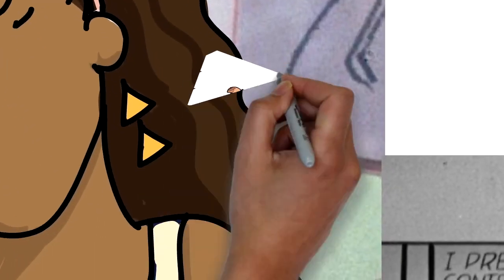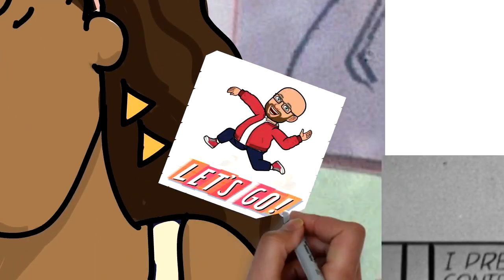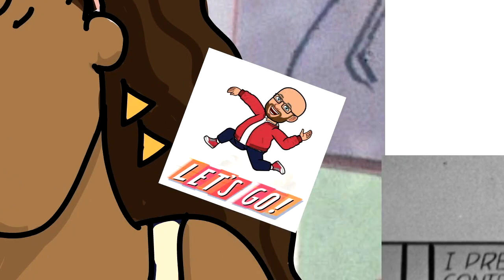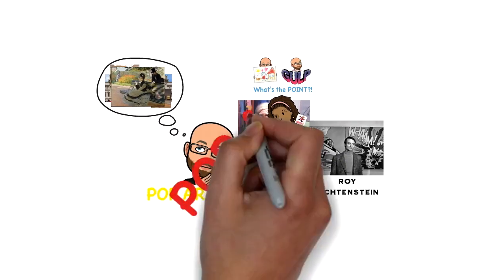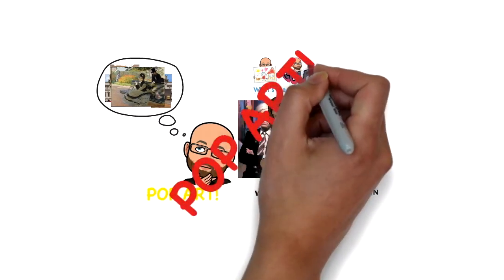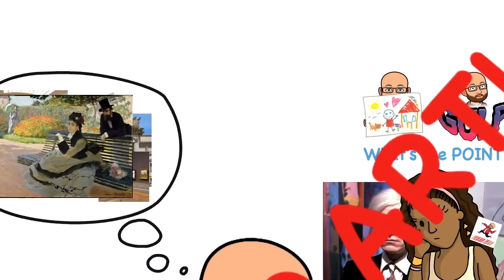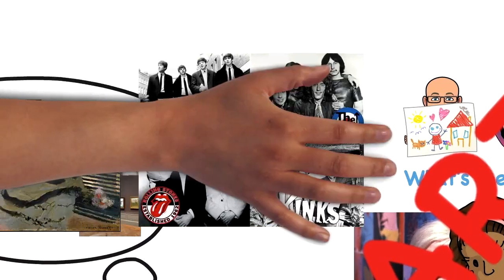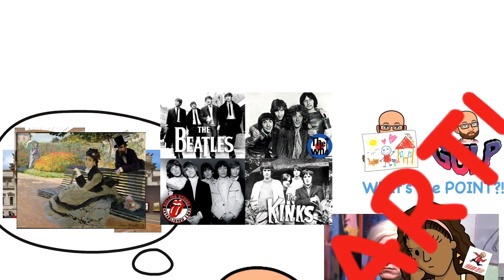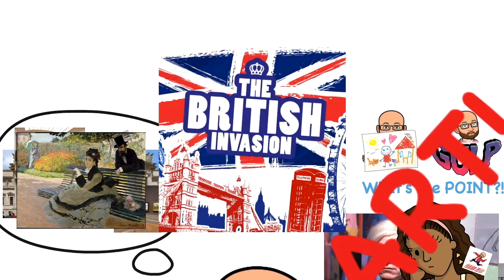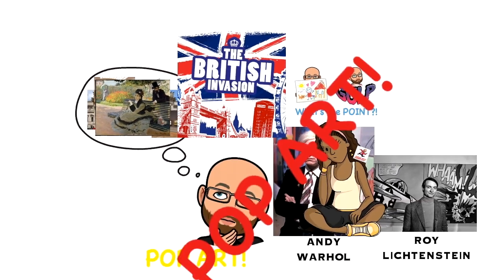So, what's a young art student with a chip on her shoulder to do? Start a new art movement, of course. And so, the pop art movement was born. It started in Britain and, like the Beatles and the Stones, invaded America.